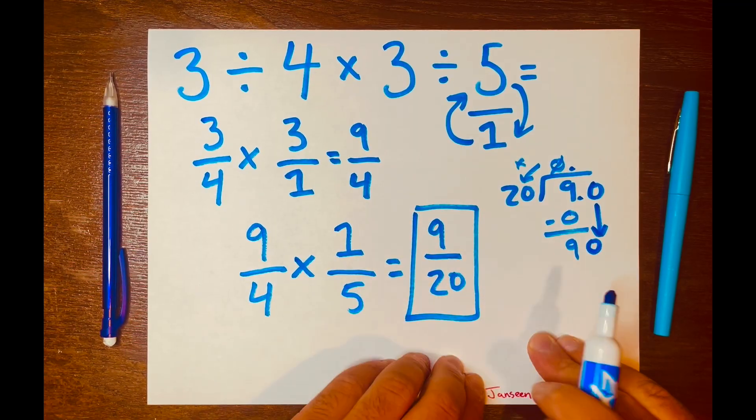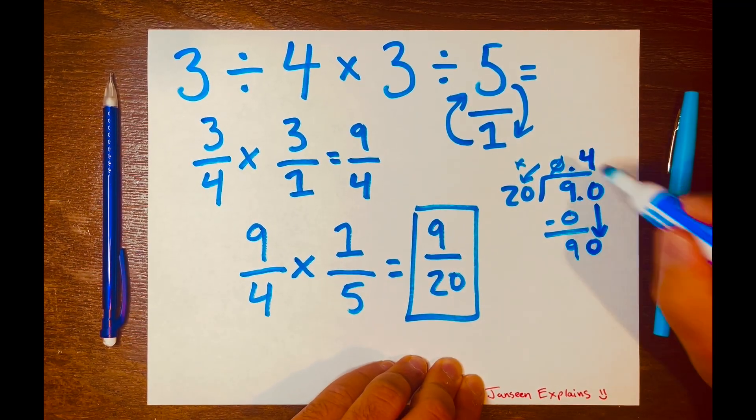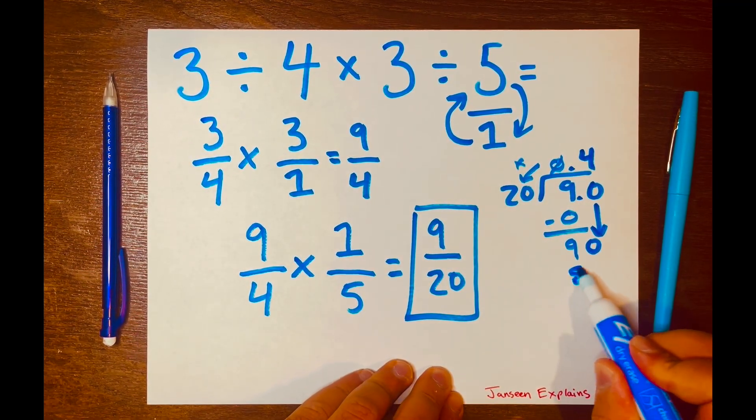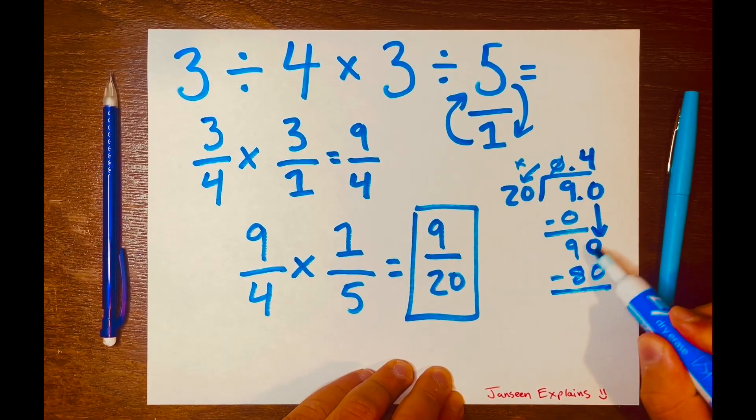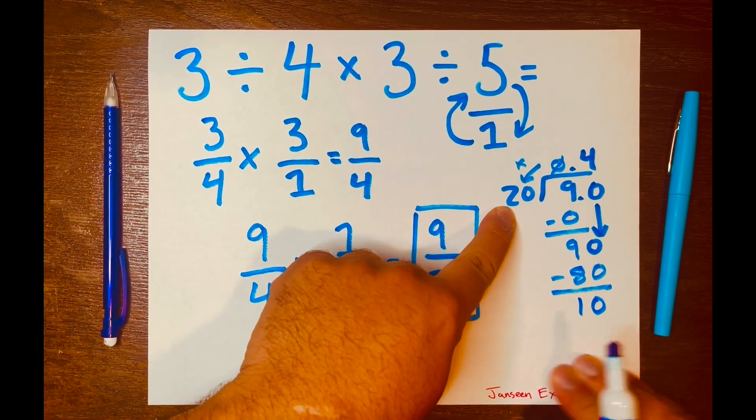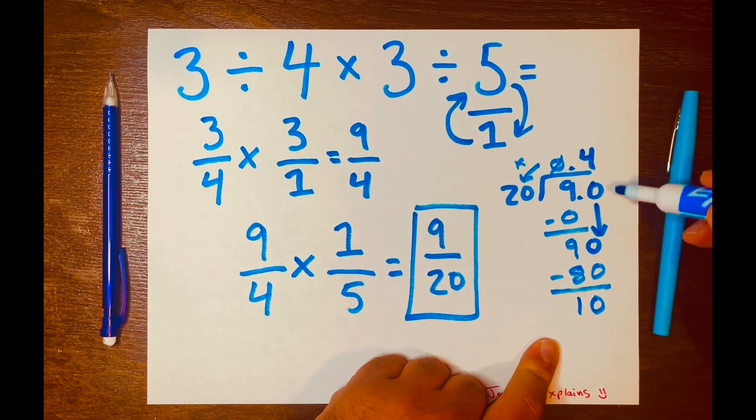So I'll write the four above the long division symbol, and four times 20 is 80. And we subtract 90 minus 80, that's 10. Now how many times can 20 fit into 10? You cannot, so we're going to borrow another zero.